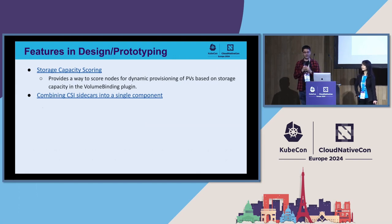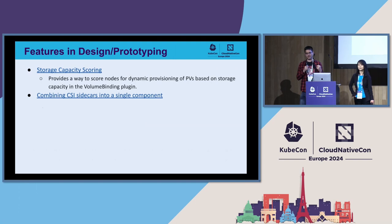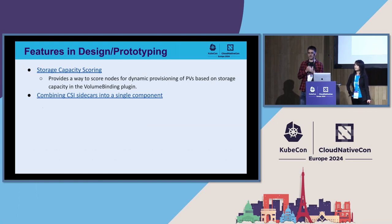We are also trying to combine CSI sidecars into a single sidecar. The external attacher, external provisioner, resizer, and snapshotter — we are trying to merge them into a single git repository. The primary motivation is to save maintenance costs, maintaining one repository instead of many. But also, with a single sidecar we can save memory and CPU at runtime, share all the informers, and it could be more comfortable for CSI driver vendors to have just one sidecar instead of four.